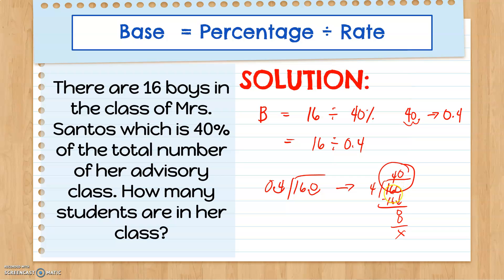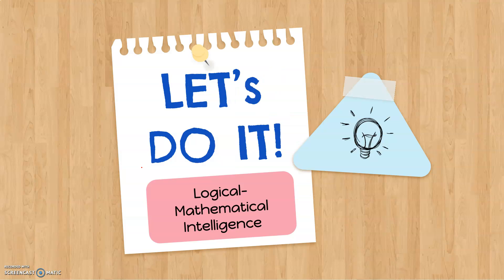That means there are 40 students in Mrs. Santos' class. To check if our answer is correct, you may multiply the base we got by 40%, which is 0.4. 40 times 0.4 gives us 16, with one decimal place considered, and we got 16 — just like what was mentioned in the problem. Now let's try some more examples.